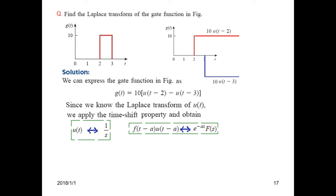The Laplace of the unit function u(t) is 1/s. Now we have to take care of the shifting, so it will be e^(-2s) times 1/s, because this is shifted by 2.